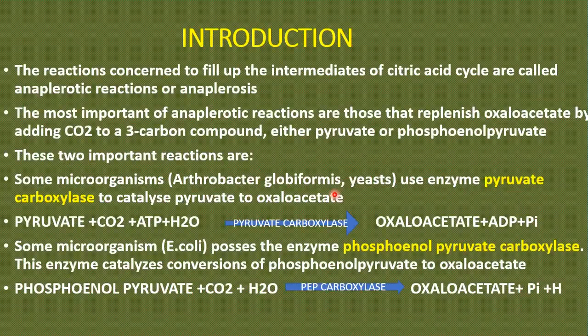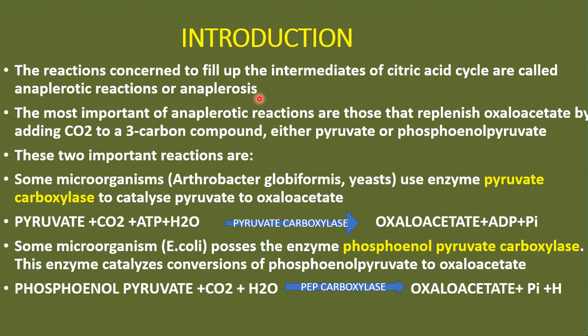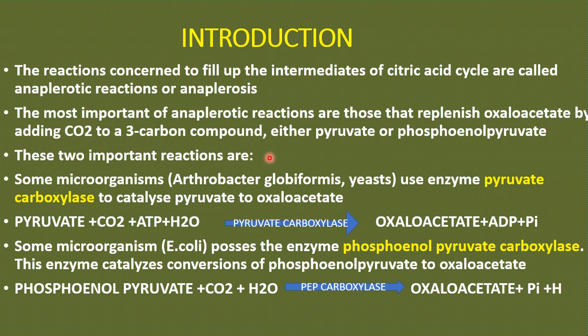Anaplerotic reactions are also called ancillary reactions. The reactions concerned with filling up the intermediates of the citric acid cycle, that is the TCA cycle, are called anaplerotic reactions or anaplerosis. The most important anaplerotic reactions are those that replenish oxaloacetate by adding carbon dioxide to a three-carbon compound — either pyruvate or phosphoenolpyruvate.